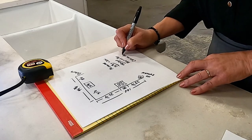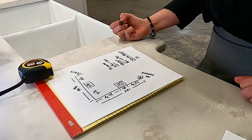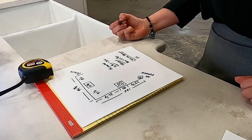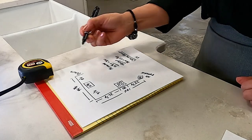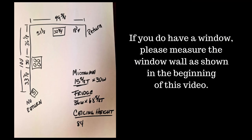The last measurement, but a very important measurement is the height of your ceiling. This will determine what size your uppers are. We have 30s, 36s and 42s as your common sizes, and I need to know the height of your ceiling so that I get the right cabinets. We don't want you paying for 42s and then they don't fit.